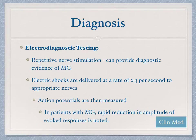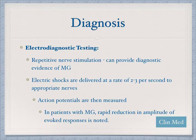Repetitive nerve stimulation with electrodiagnostic testing can provide evidence suggesting myasthenia gravis. Electric shocks are delivered and action potentials are measured. A rapid reduction in the amplitude of the action potentials is noted and may suggest the patient has myasthenia gravis.